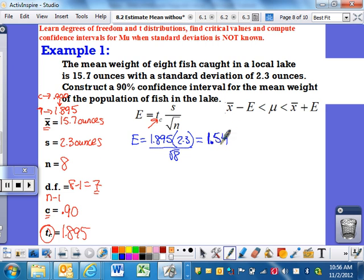So if you go in your calculator and you go 1.895 times 2.3 divided by the square root of 8, you will get an error of 1.54. So we can be 95% confident that our mean is 1.54 ounces to the left and to the right of my x bar. That's kind of the idea.